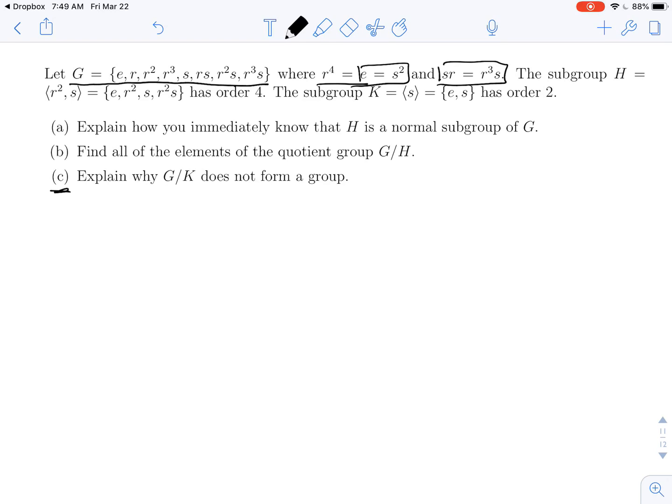In this video, we're going to look at a different subgroup than the last video. In the last video, we looked at subgroup H, and here we're going to look at the subgroup K, which is generated by S. Now, S has order 2 because S squared is E, so there are just two elements, E and S.